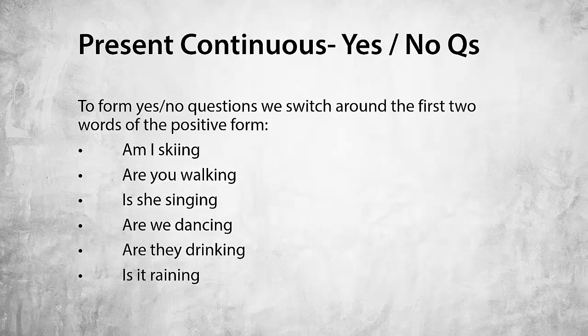To form yes/no questions, we basically switch around the first two words of the positive form. So: Am I skiing? — in the positive form it's I am skiing. Are you walking? Is she singing? Are we dancing? Are they drinking? Is it raining?